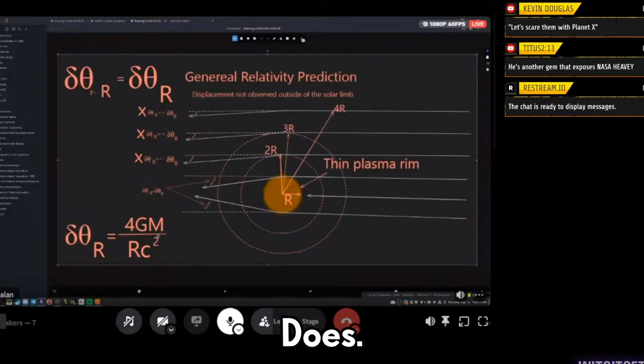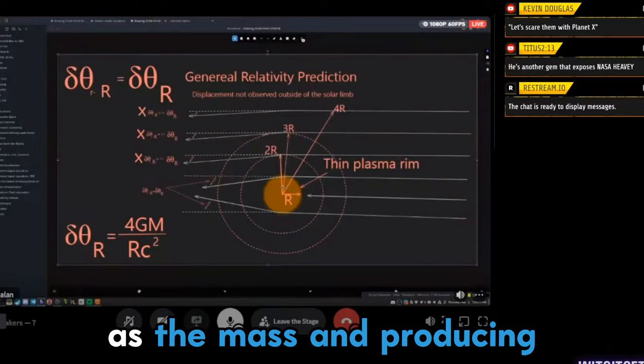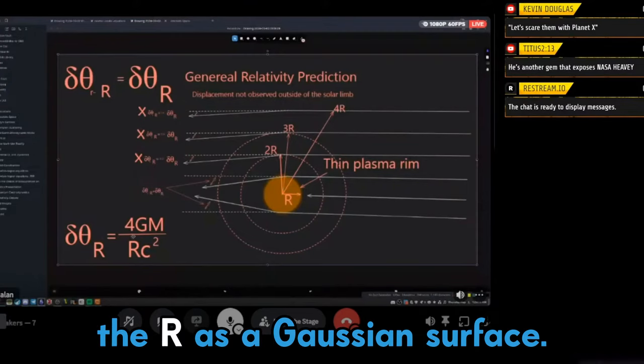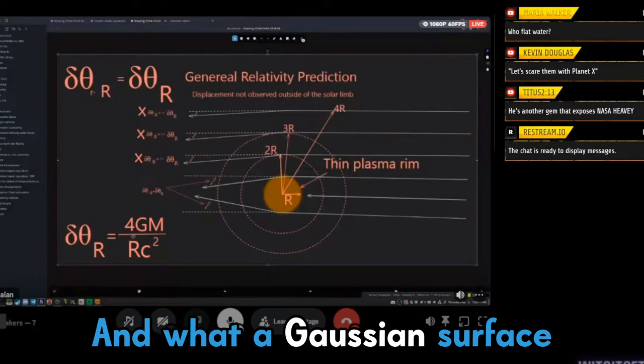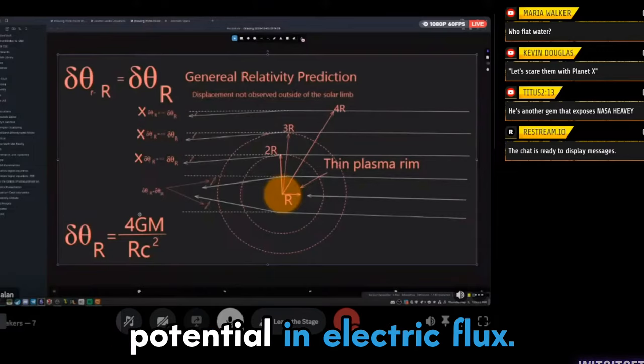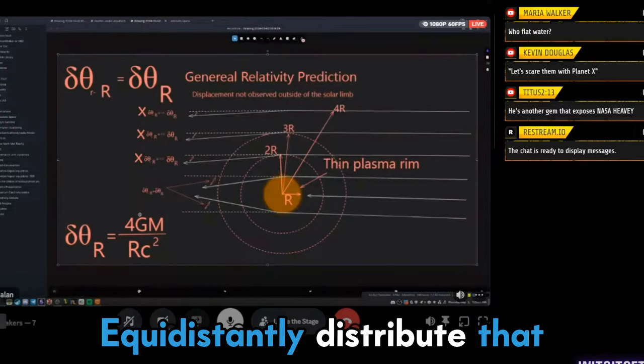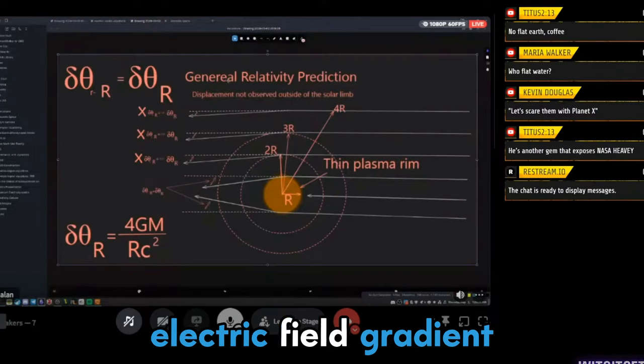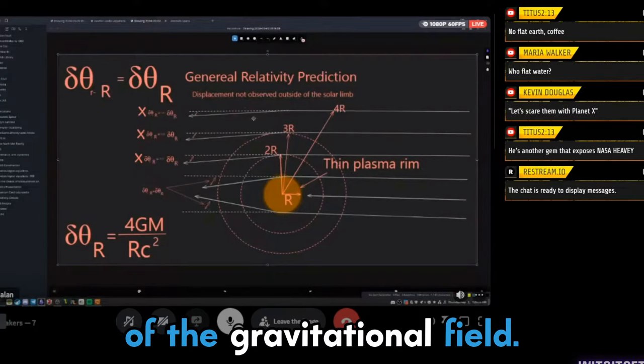And what Edward Doughty Jr. does is instead of using the sun as the mass and producing a mass-attracting mass gravitational field, he treats the R as a Gaussian surface. And what a Gaussian surface does is it would convert this M and this G into a charge potential and electric flux and equidistantly distribute that radially outwards, right?